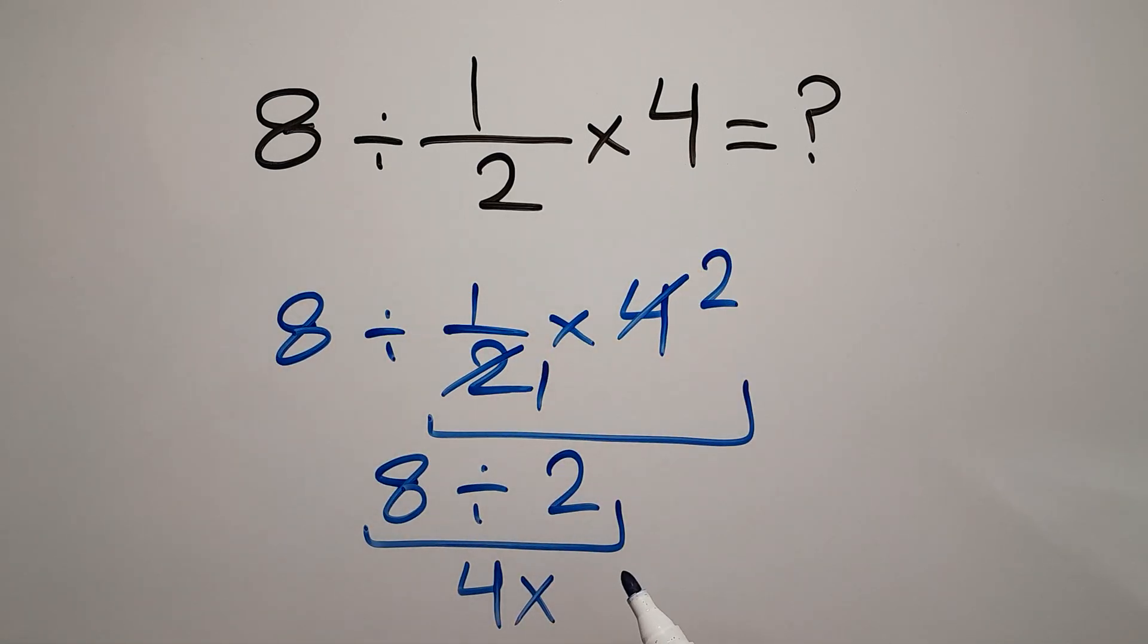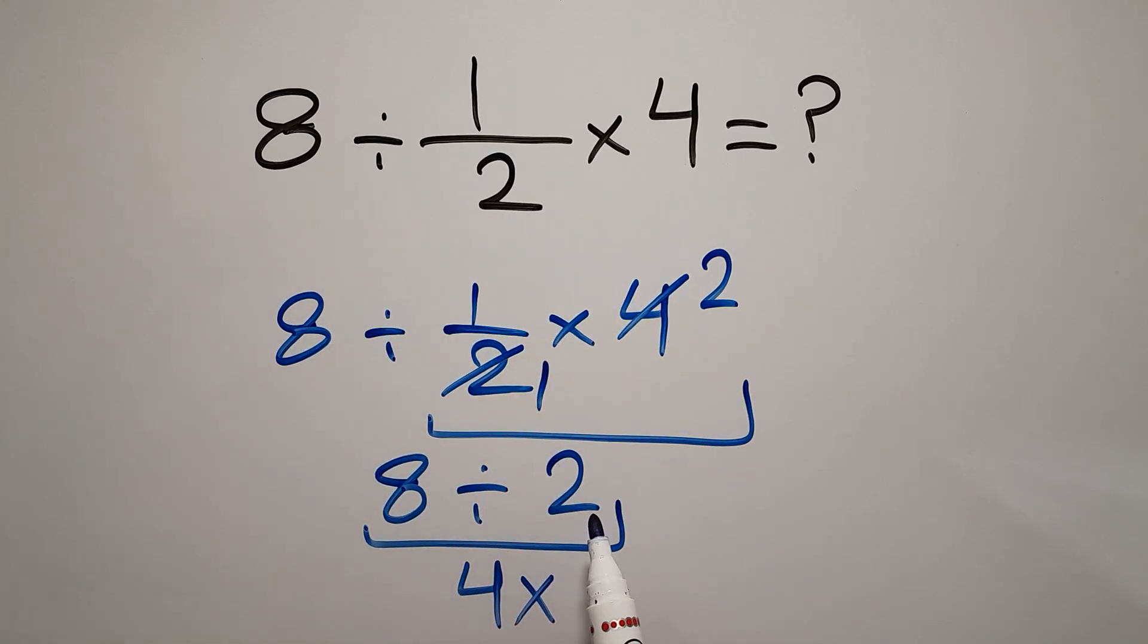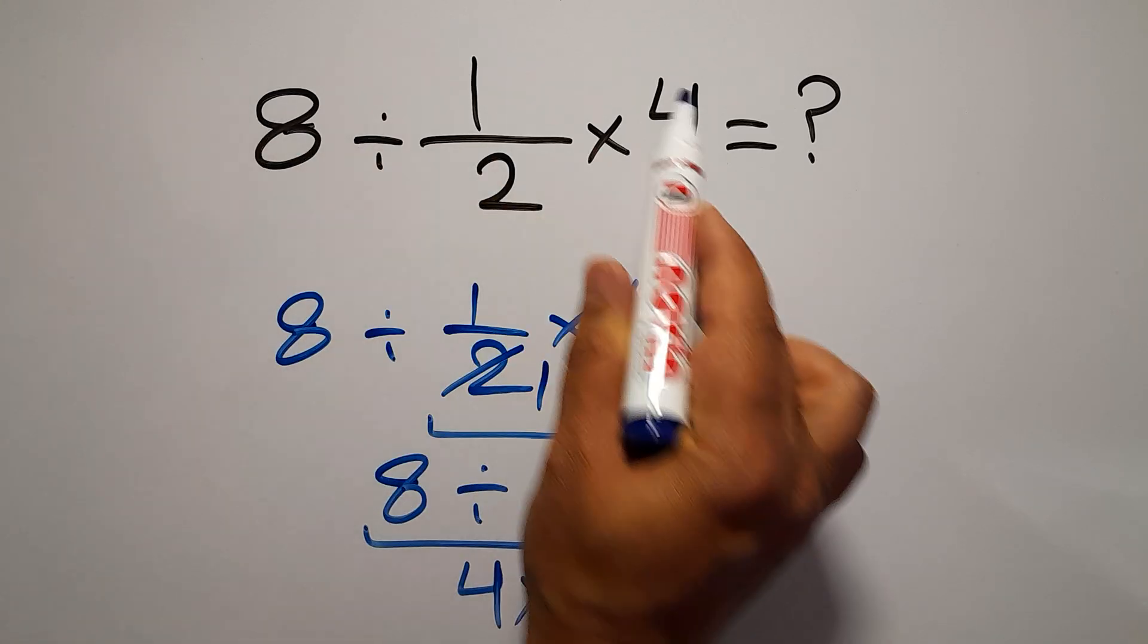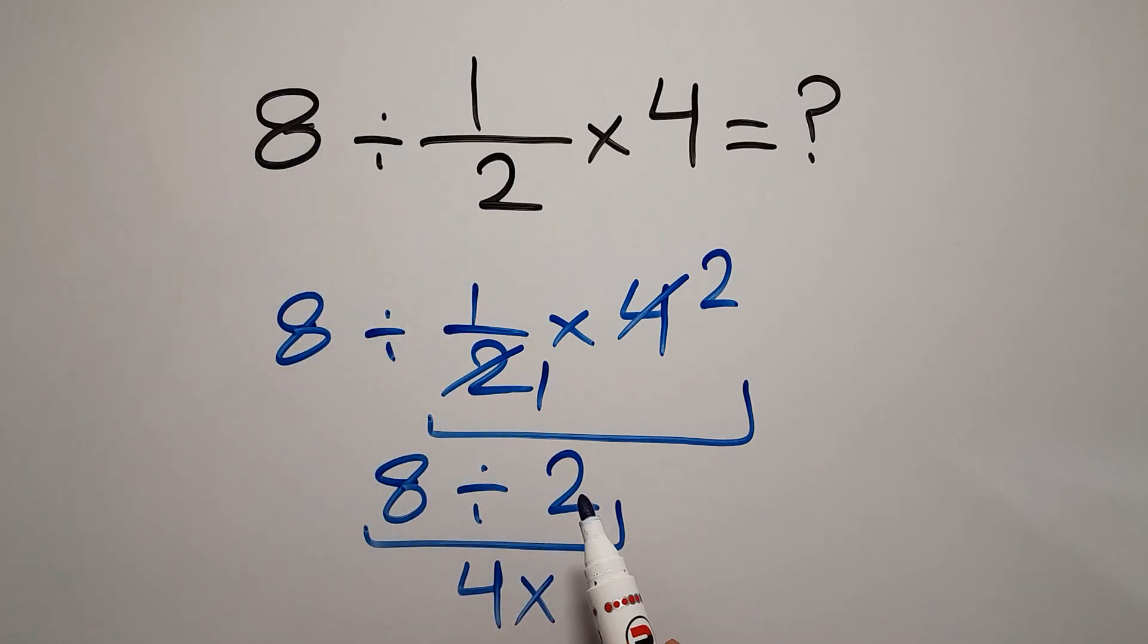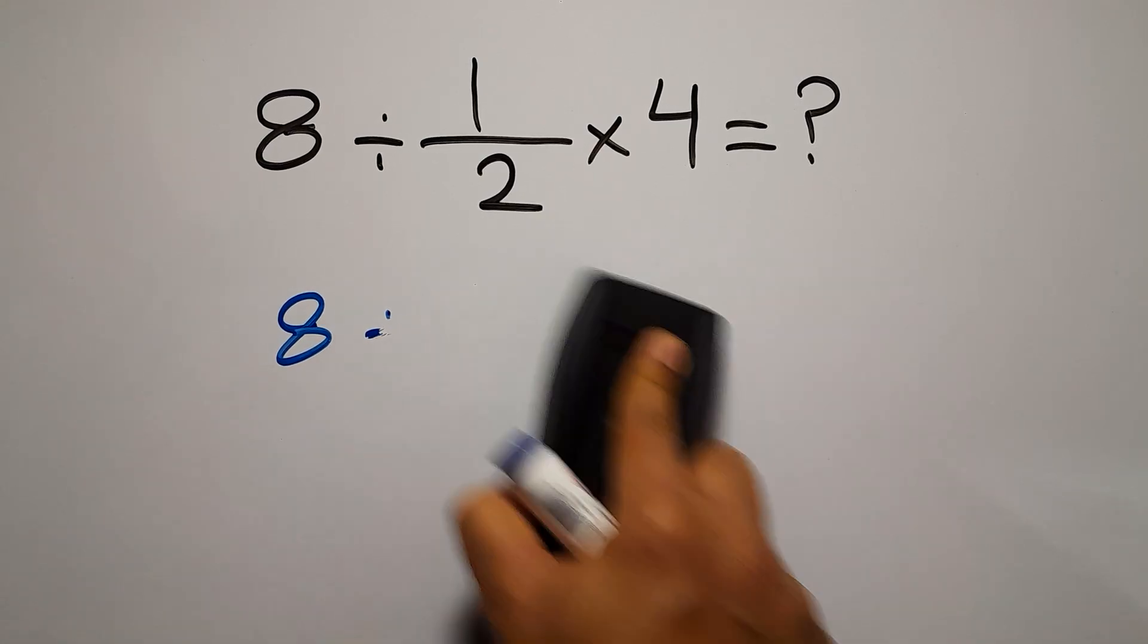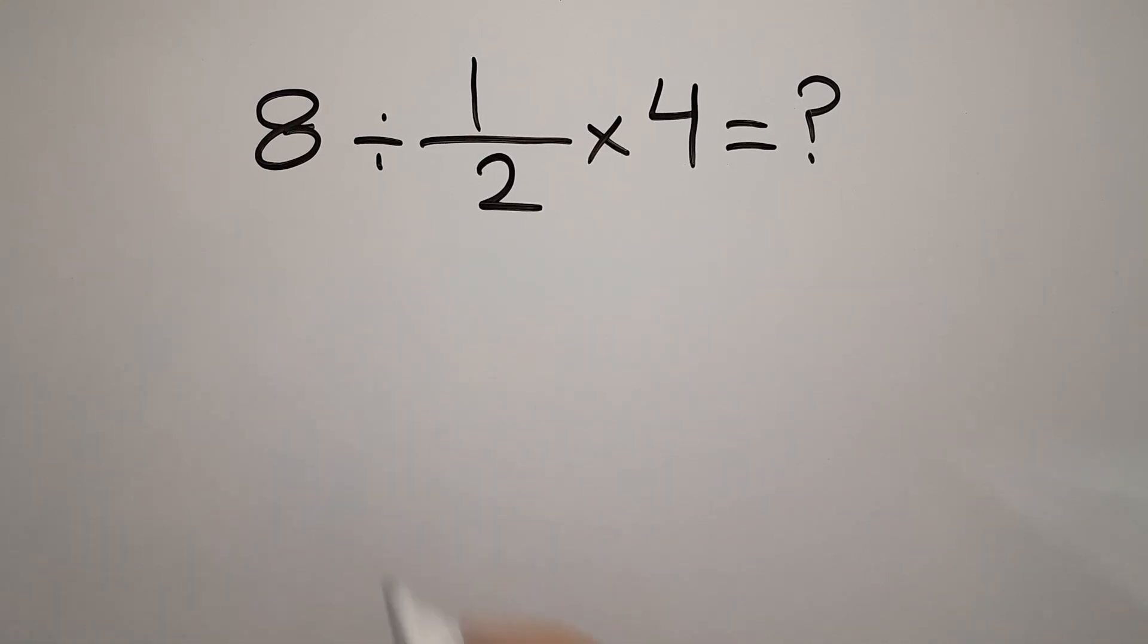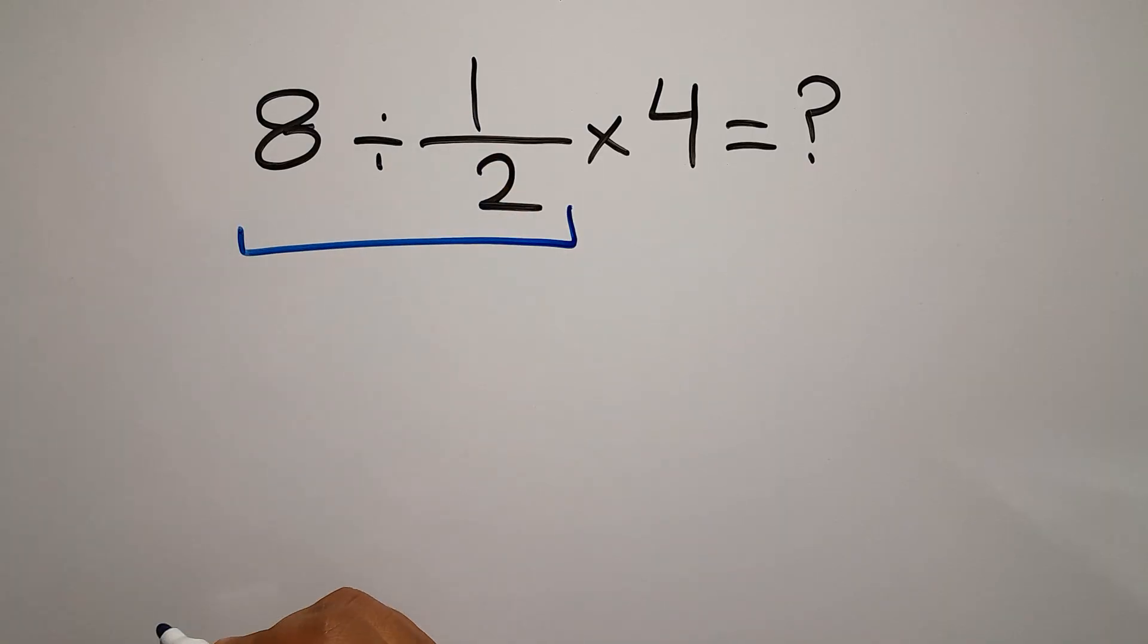In this expression we have one division and one multiplication. As we know, multiplication and division have equal priority and we have to work from left to right. So first we have to do this division, then this multiplication.